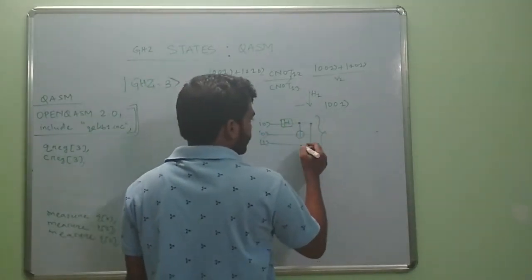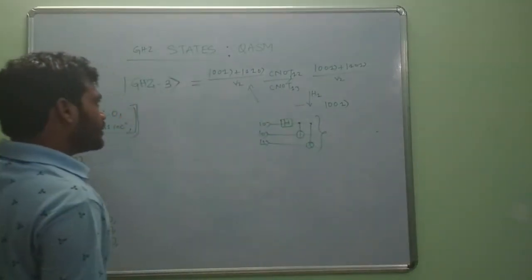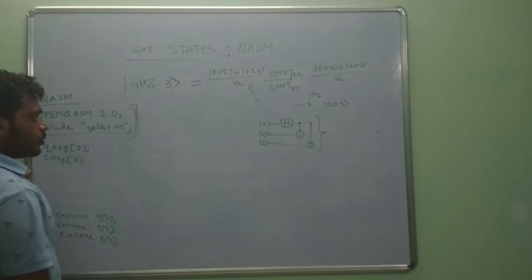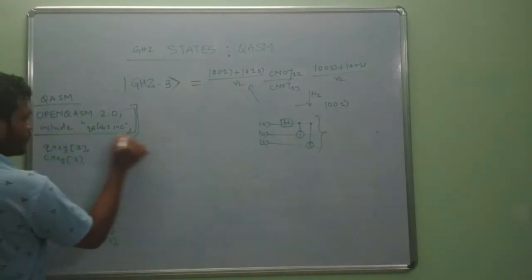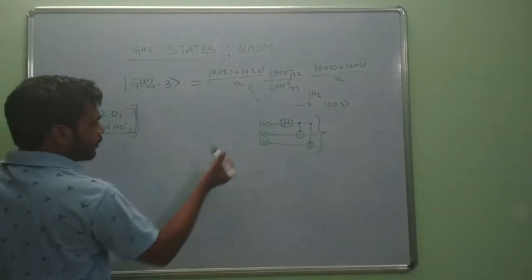Now let us create this state in Qiskit. In Qiskit we already have these two commands, and we will take three quantum registers.